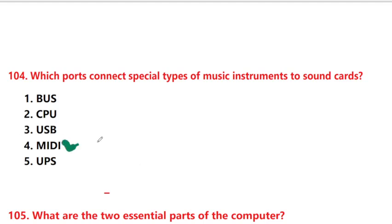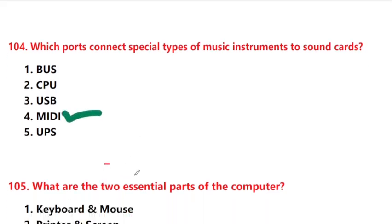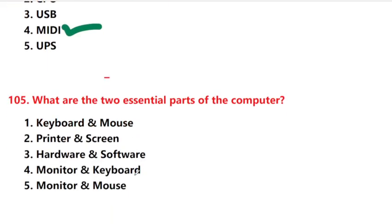What are the two essential parts of the computer? Options: keyboard and mouse, printer and screen, hardware and software, monitor and keyboard, monitor and mouse. Answer is option 3: hardware and software.